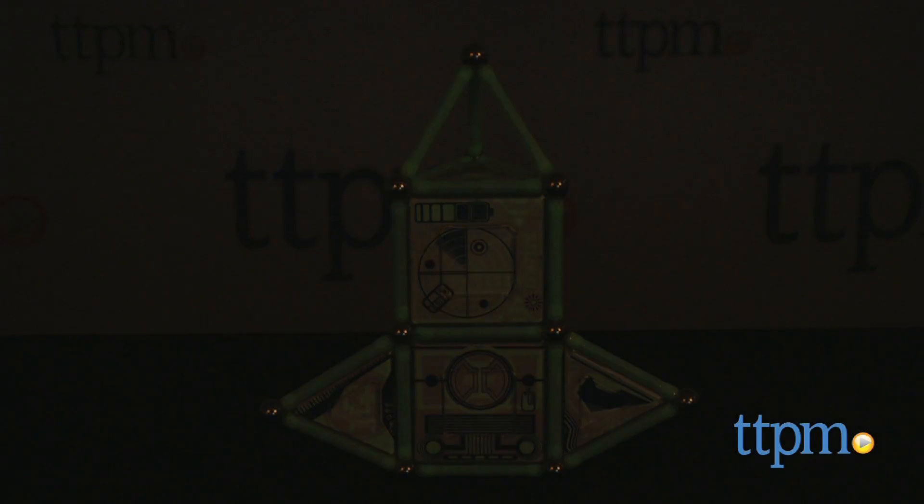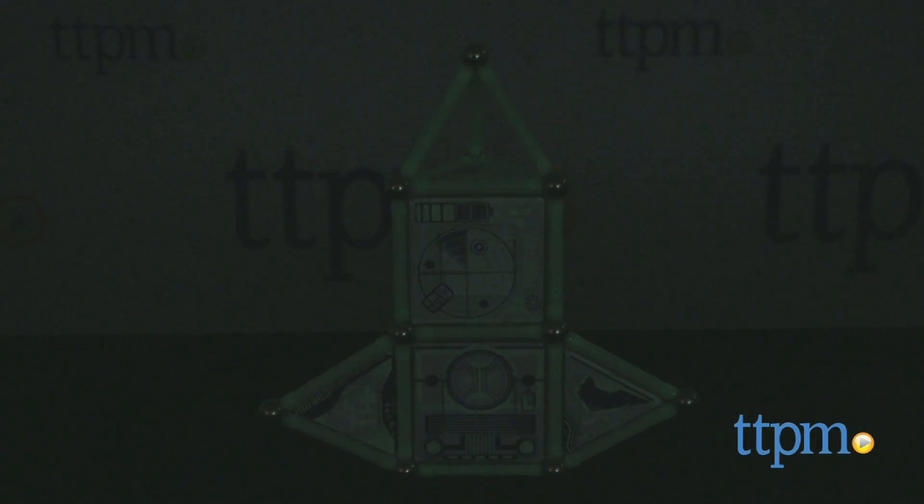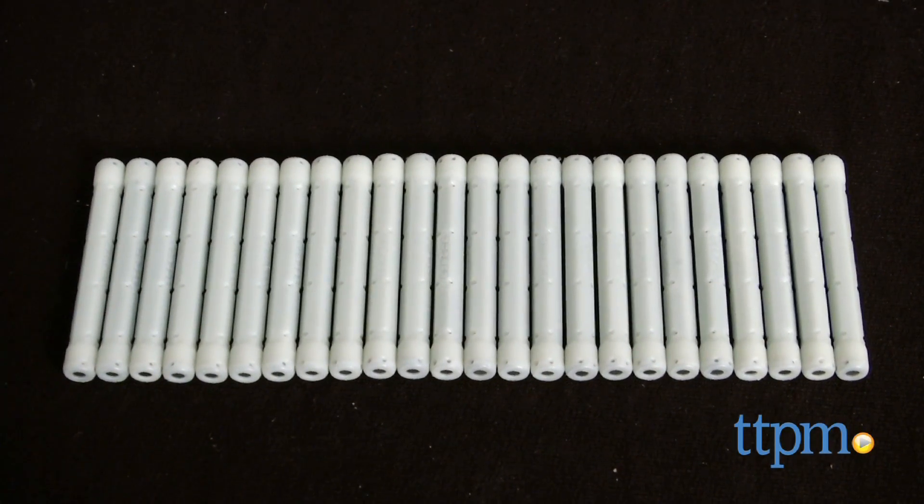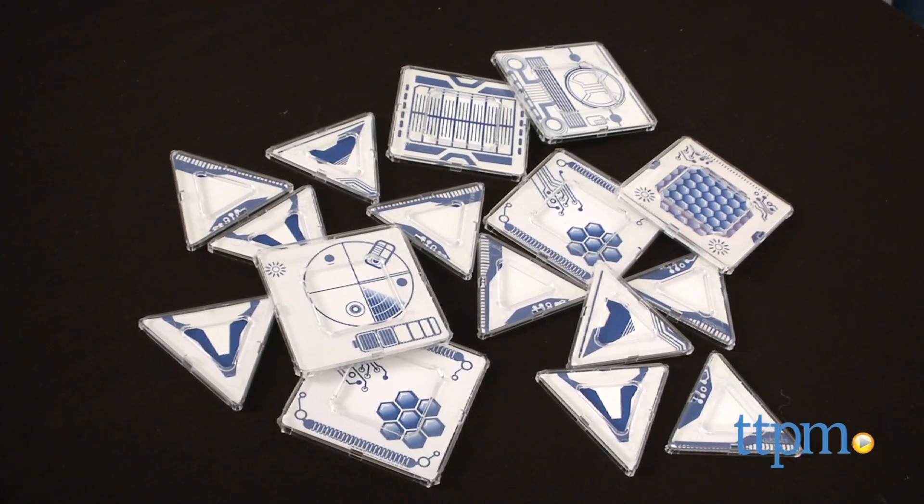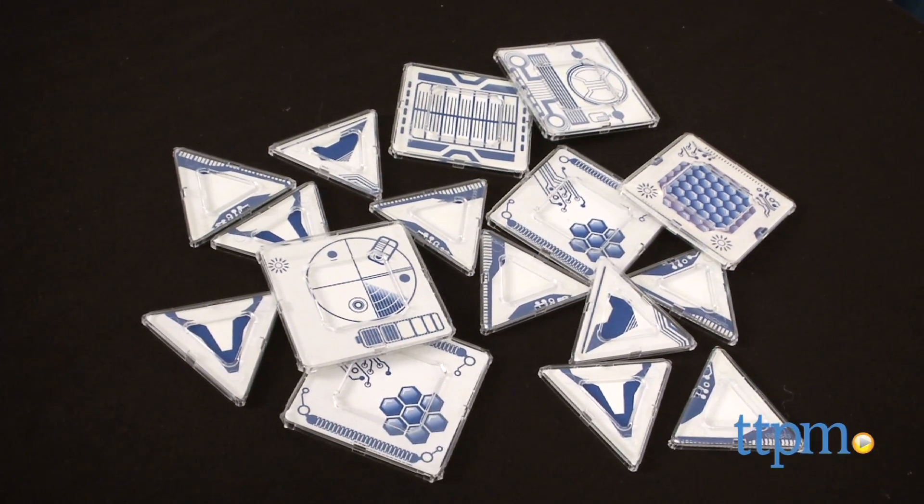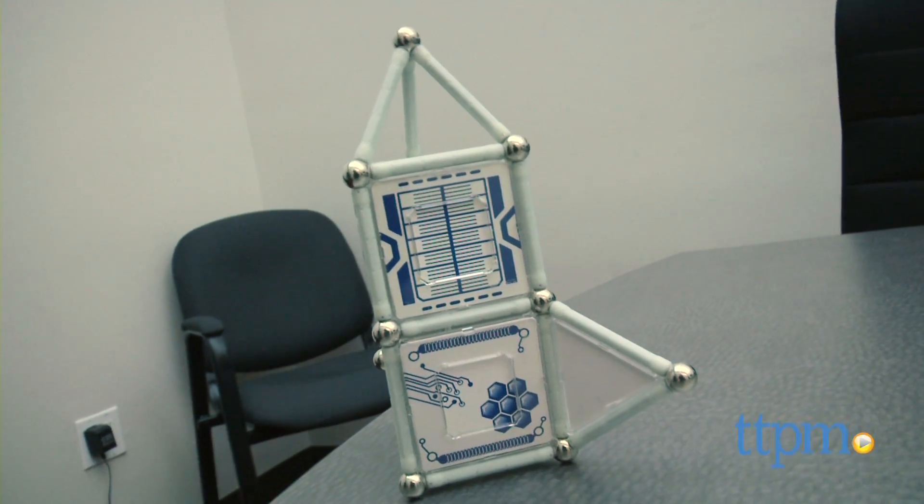This magnetic construction set glows in the dark. The set's 76 pieces include magnetic rods and balls, along with triangle and square-shaped plastic panels with paper designs inside. The rods and the paper designs have the glow feature.